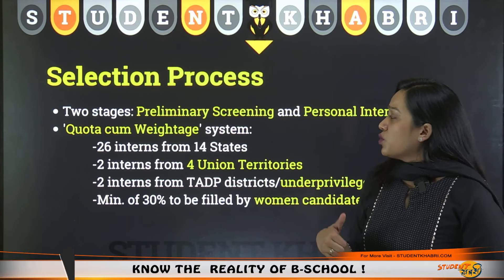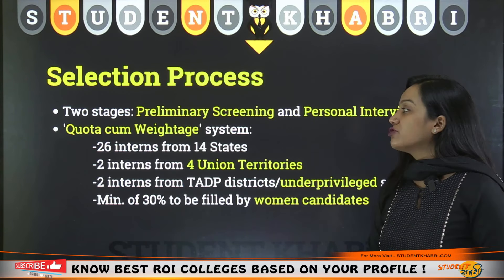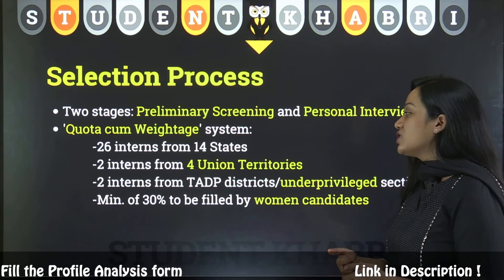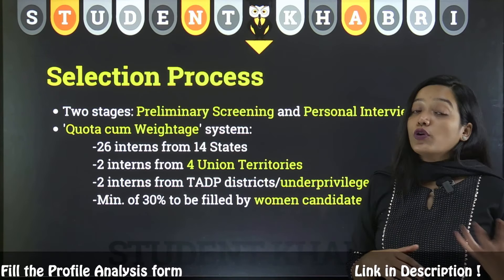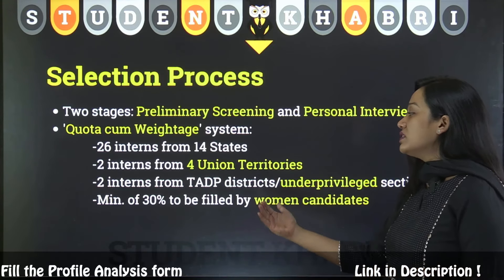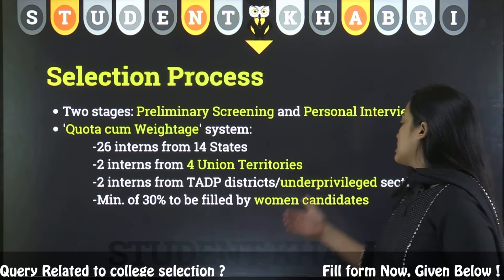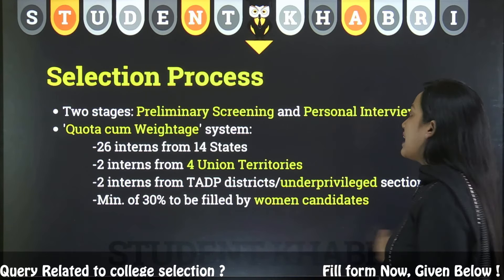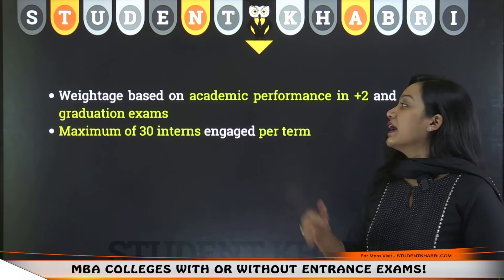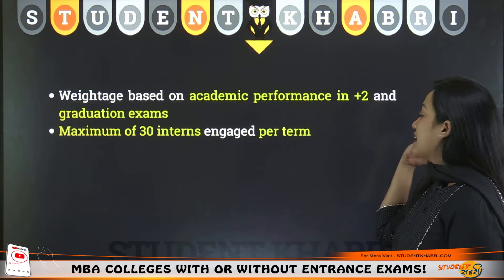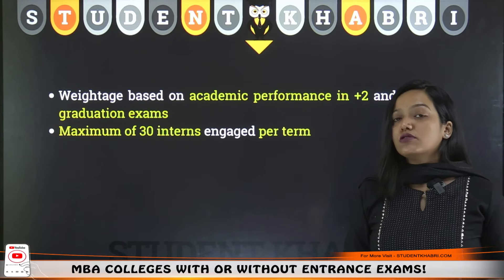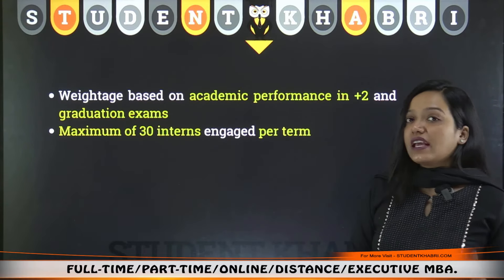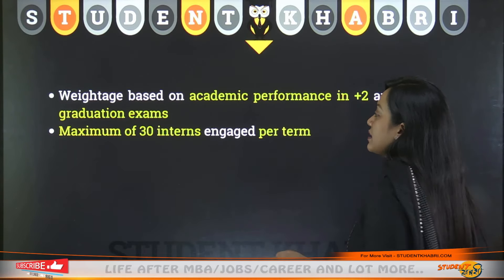Regarding the selection process: the first round is a personal interview. Before that, the selection is based on criteria where 26 interns are selected from 14 states, 2 interns from Union Territories, and 2 interns from aspirational districts or underprivileged sections. A minimum of 30% seats are to be filled by women candidates. The weightage is based on academic performance in graduation as well as in 10+2, and a maximum of 30 interns are engaged per term across the two annual internship cycles.